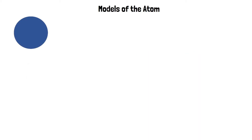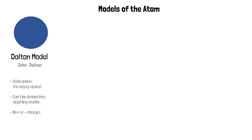The first model you need to know about is the Dalton model. In this model the atom is a solid sphere with no empty space. John Dalton believed that atoms could not be divided into anything smaller. His model also doesn't include any positive or negative charges because protons and electrons hadn't been discovered yet.